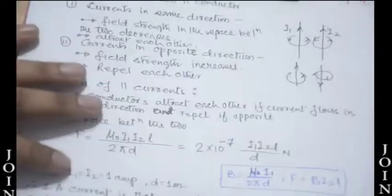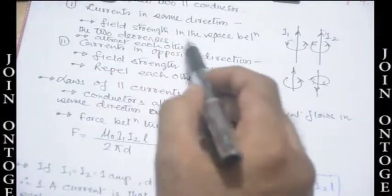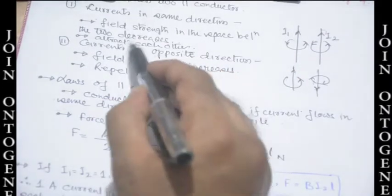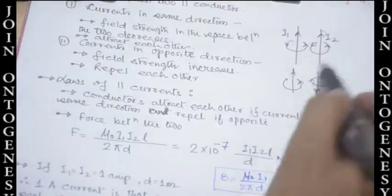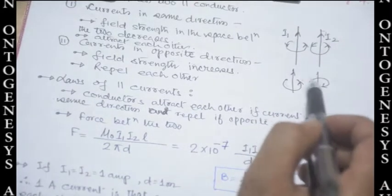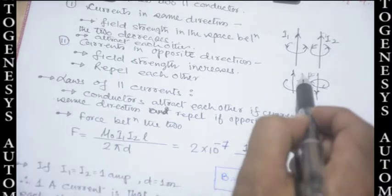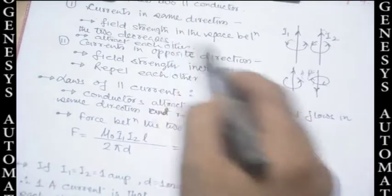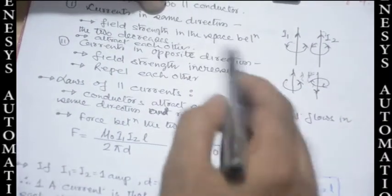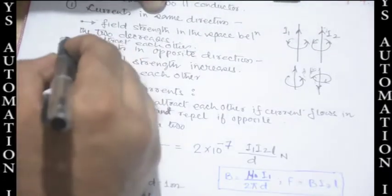Next is the force between two parallel conductors. When currents flow in the same direction, the field strength in the space between the two decreases. The flux from one conductor opposes the flux from the other, so the field strength in between decreases, but these conductors will attract each other — very important.